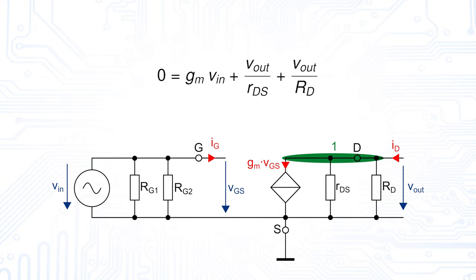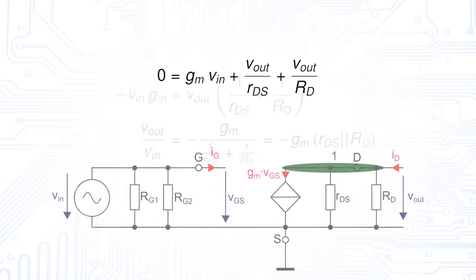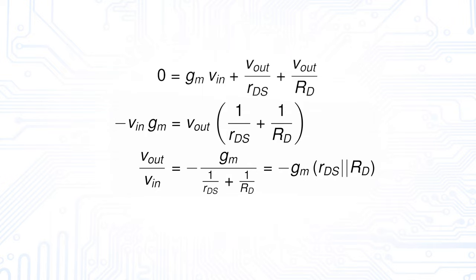In this equation, our unknowns are Vin and Vout. Hence, we reformulate this equation. The voltage relation between Vout and Vin is consequently minus Gm times 1 over 1 over Rds plus 1 over Rd,